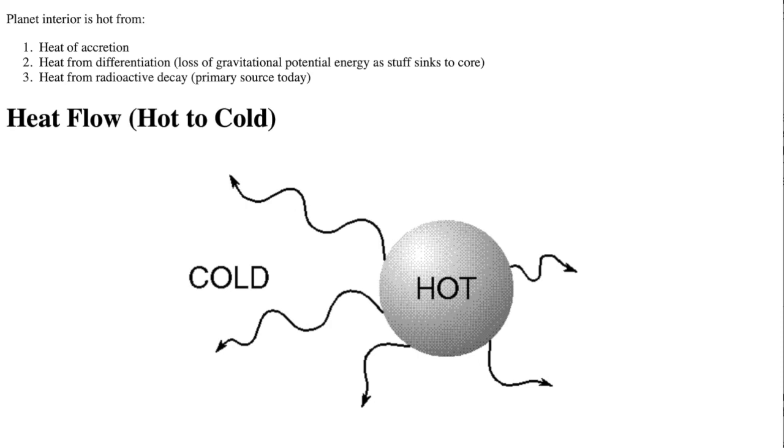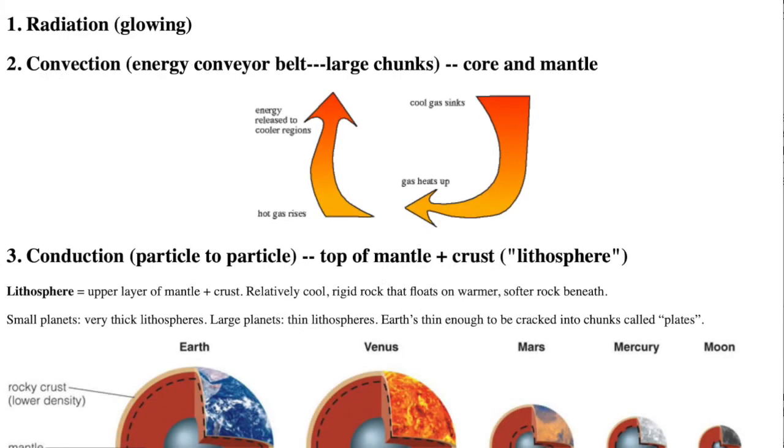Everywhere in the universe, energy flows from hot to cold places through three ways. Number one, radiation, meaning electromagnetic radiation. Glowing. Nature will try to use this first, but in the case of rock, radiative transfer is not used because light cannot pass through it.